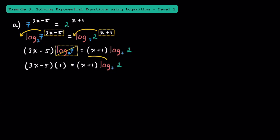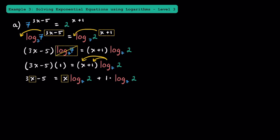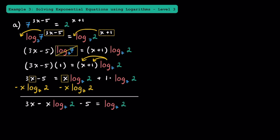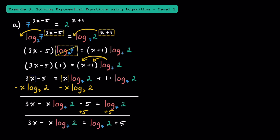Looking at the right side, we can distribute log base 7 of 2 to both terms inside the parentheses. We get x times log base 7 of 2 plus 1 times log base 7 of 2. To solve for x, we're going to have to get the terms that have x on the same side. To do that, we're going to subtract x times log base 7 of 2 from both sides. Now we'll have 3x minus x times log base 7 of 2 minus 5 is equal to log base 7 of 2. Let's add 5 to both sides, and we get 3x minus x times log base 7 of 2 is equal to log base 7 of 2 plus 5.